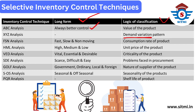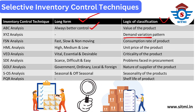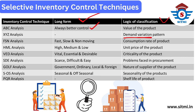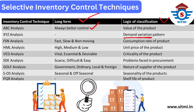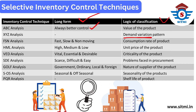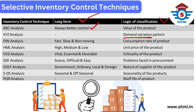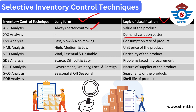The fourth technique is HML analysis. HML stands for High value, Medium value, and Low value product. The logic used for this analysis is the unit price of the product, making it one of the simplest calculations. The fifth analysis is VED analysis, which stands for Vital, Essential, and Desirable products, and the logic for VED analysis is the criticality of the product.